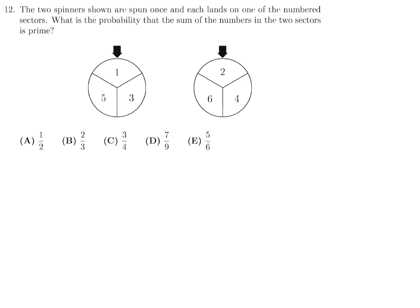The two spinners shown are spun once and each lands on one of the numbered sectors. What is the probability that the sum of the numbers in the two sectors is prime? All right, so there's only 3 and 3, so it doesn't take that long to write them all out, the combinations. So 1 and 2, 1 and 4, 1 and 6. And you can also have 3 and 2, 3 and 4, and 3 and 6. And then the other combination is 5 and 2, 5 and 4, and 5 and 6.